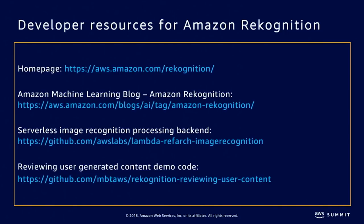I'll leave you with some links. The Amazon Machine Learning blog has interesting articles on building facial recognition systems, use cases, and code samples. There are complete worked examples with all code provided. There's also a GitHub repository for the human review system with the Step Function workflow. Our homepage has information about customers and different use cases. Please do submit session feedback — what you liked, what you didn't like, it really helps us improve. Thank you.